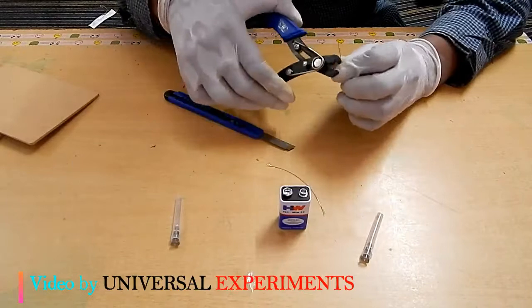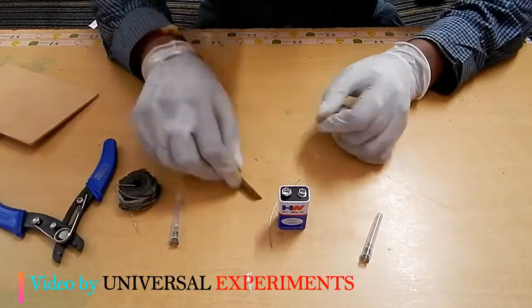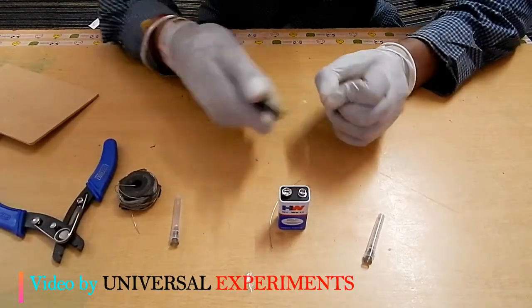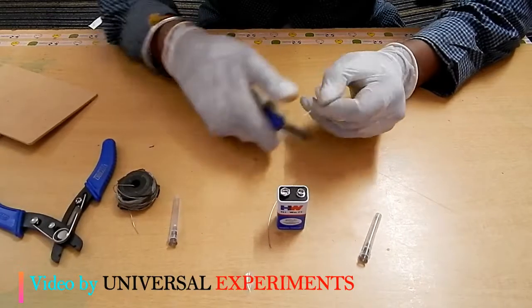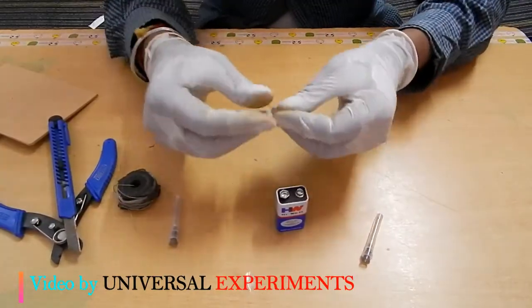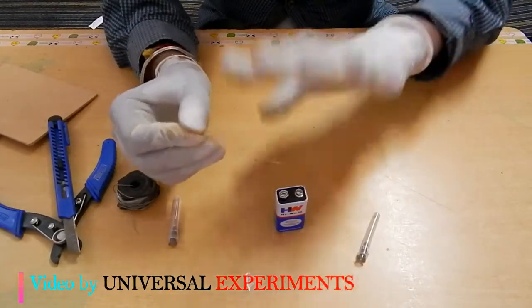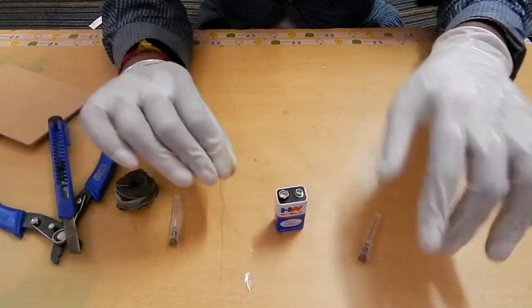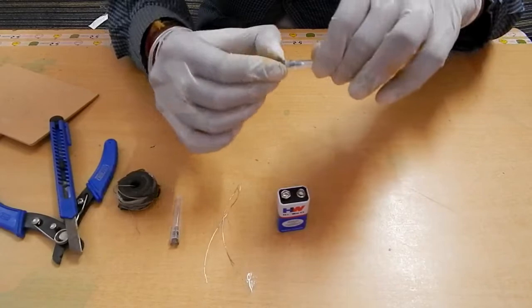We are now going to prepare the product. We have taken two tungsten wires to remove the polish and now we will insert the needle inside.